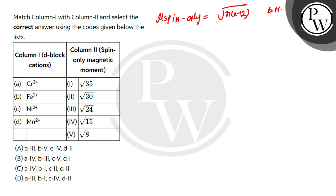So in chromium three positive, the configuration is 3d³, n value is 3. So μ value will be √(3(3+2)) = √(3×5) = √15.